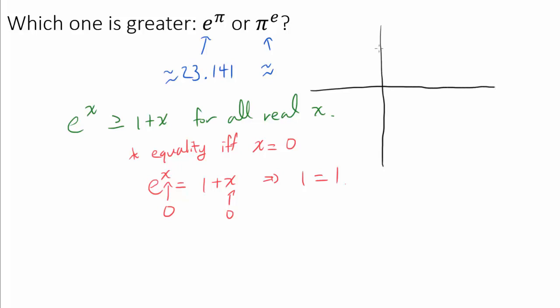If you graph e to the x, you are going to get this function that's increasing and concave up. So this is graph of e to the x. And if you graph 1 plus x, it's very easy to verify that 1 plus x is the equation of the tangent line to e to the x at x equals to 0. So we know this is 1 plus x.